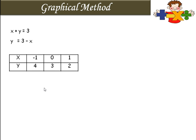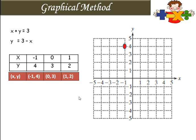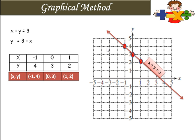Now we will represent these three coordinates on the graph. The three coordinates are: minus 1 and 4; 0 and 3; and 1 and 2. See the first coordinate: x is minus 1 and y is 4. Then 0 and 3 — here x is 0 and y is 3. And 1 and 2 — here on the x-axis is 1 and on the y-axis is 2. Draw a straight line through these points and mention the equation on it.